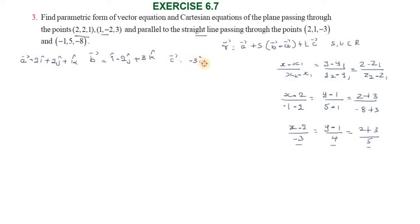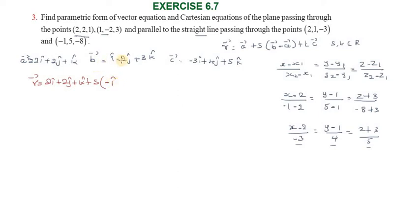Now we write the vector equation: r vector equals a vector, which is 2i cap plus 2j cap plus k cap, plus s into (b minus a), giving minus i cap minus 4j cap plus 2k cap, plus t into c vector, which is minus 3i cap plus 4j cap plus 5k cap.